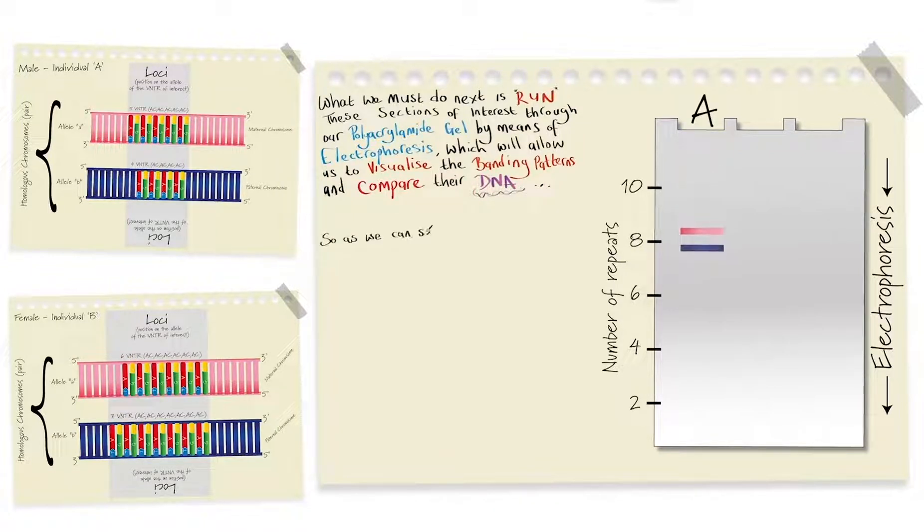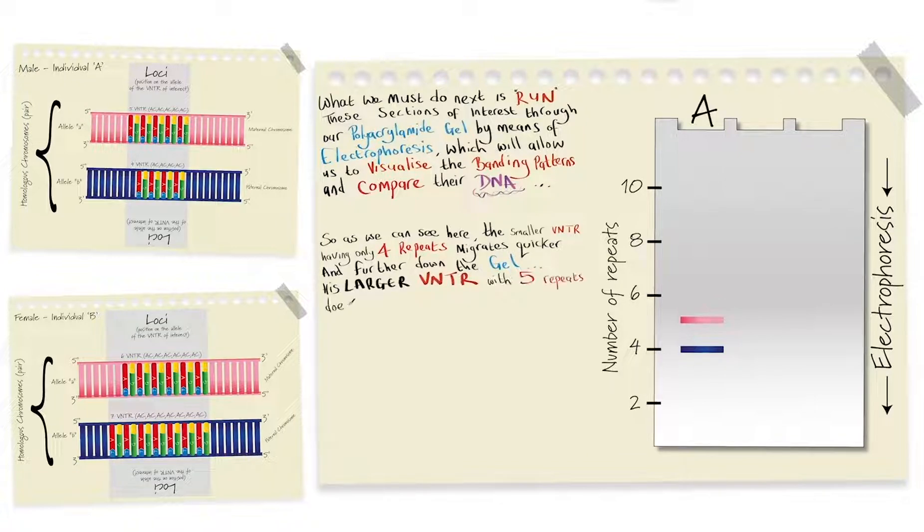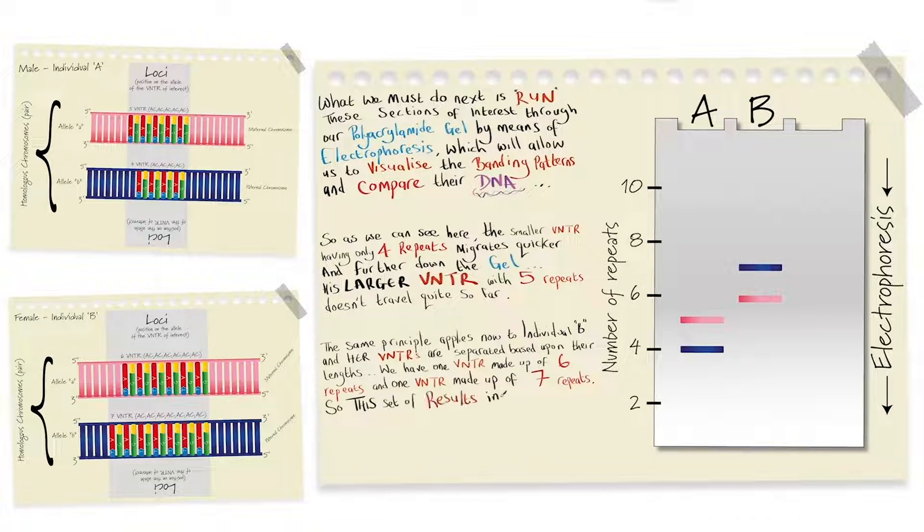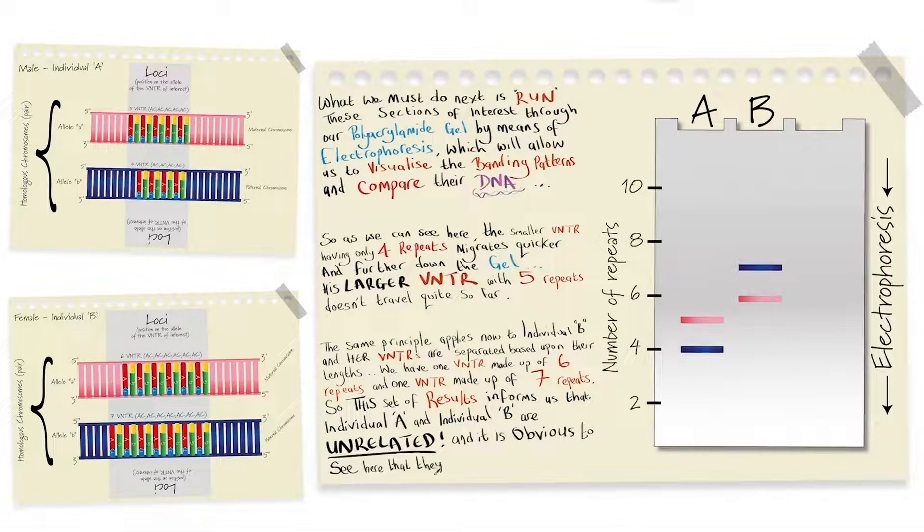So, as we can see here, the smaller VNTR, having only 4 repeats, migrates quicker and further down the gel. His larger VNTR, with 5 repeats, doesn't travel quite so far. The same principle applies now to individual B, and her VNTRs are separated based upon their lengths. We have one VNTR made up of 6 repeats, and one VNTR made up of 7 repeats. So this set of results informs us that individual A and individual B are unrelated, and it's obvious to see here that they don't share the same DNA.